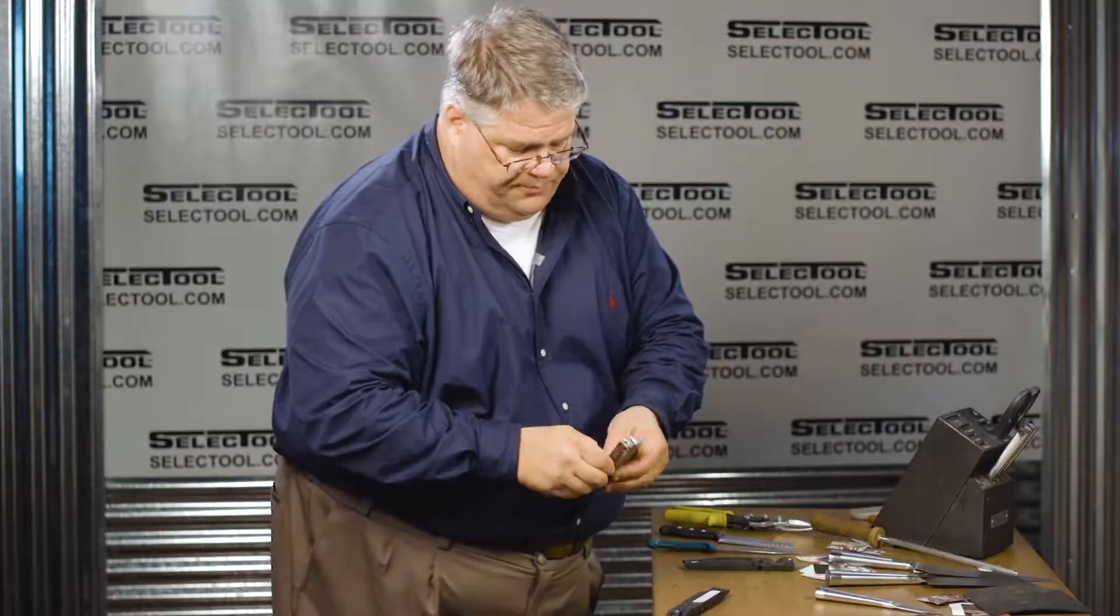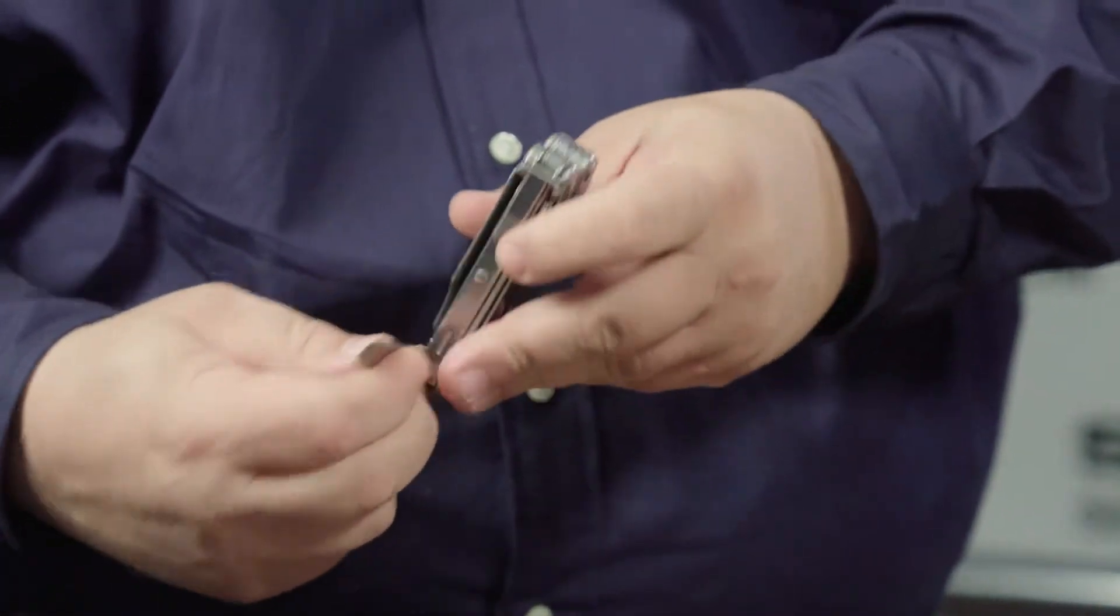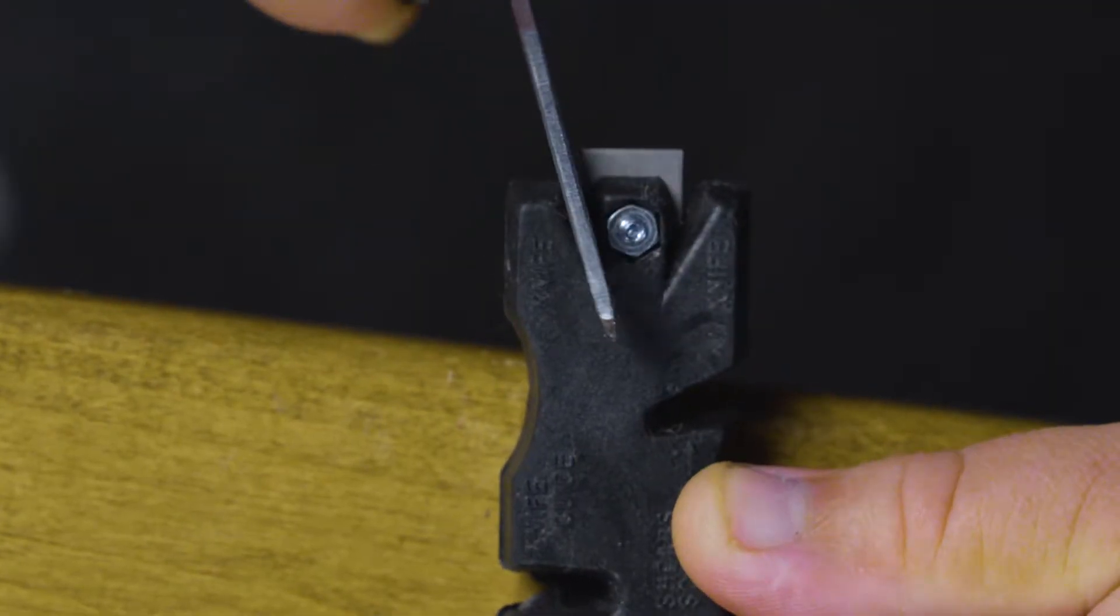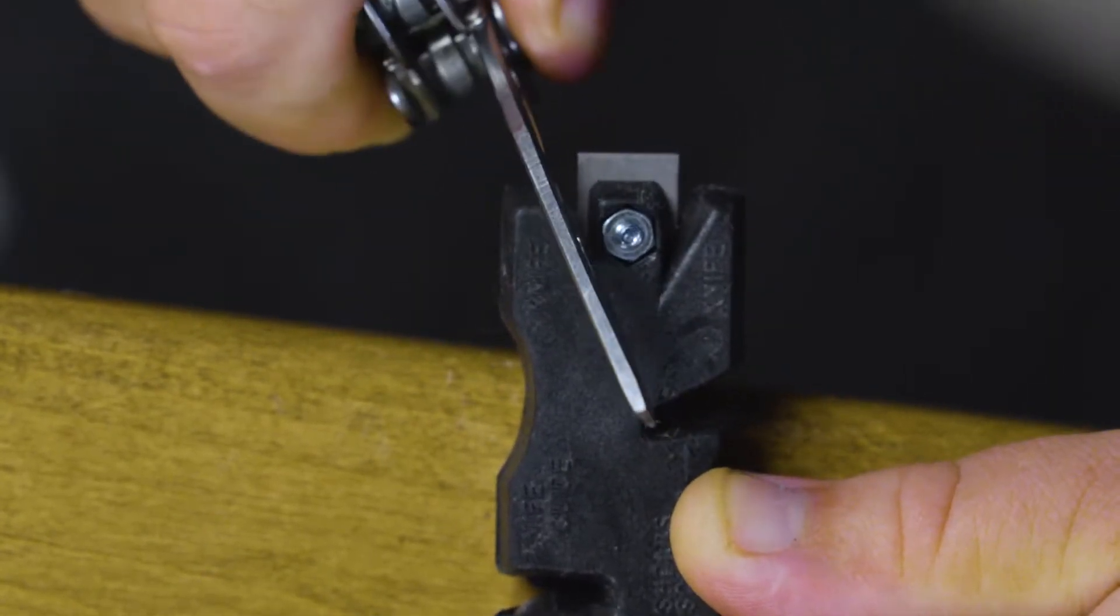Now this is a Leatherman tool here. This has got a lot of sharpness. Here's your regular blade. All right, when I set this up, we're going to use this to sharpen. So fit the blade in here, a little bit of pressure.